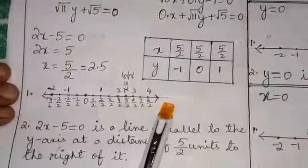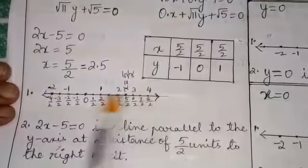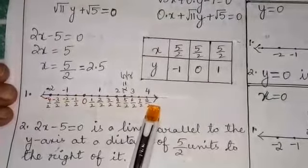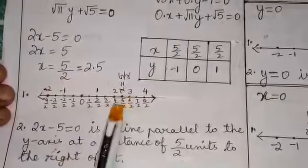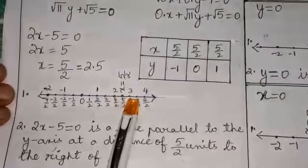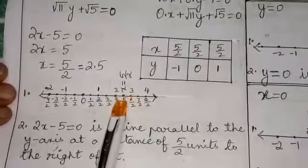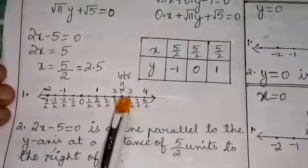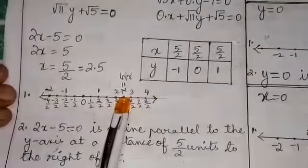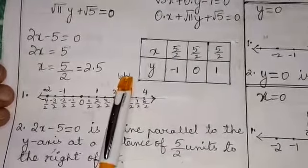So take up the number line, show the markings on it. Clearly 5 by 2 or 2.5 lies between 2 and 3. So we have marked it here 5 by 2 which lies between 4 by 2 and 6 by 2. So just mark off that point and call it x is equal to 5 by 2.